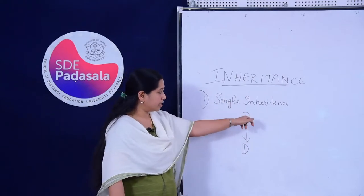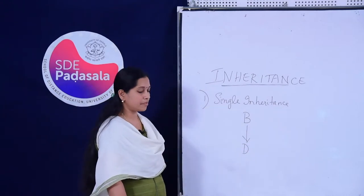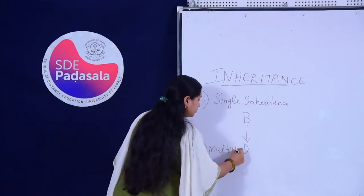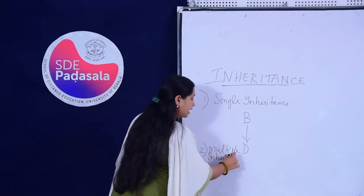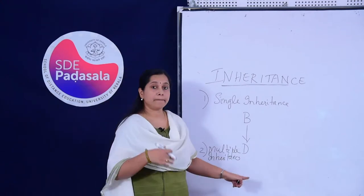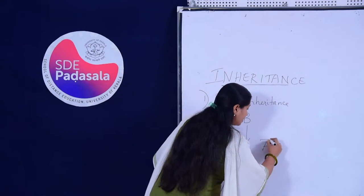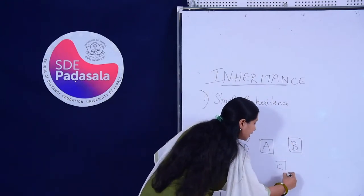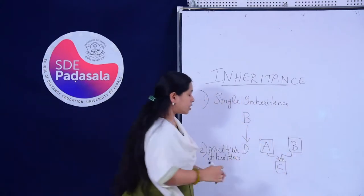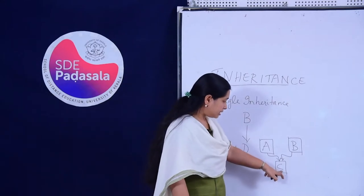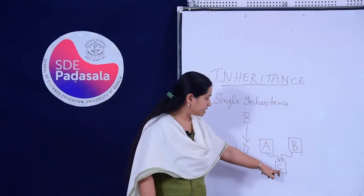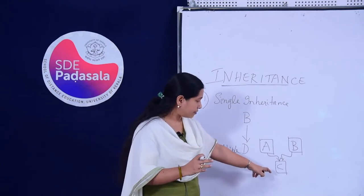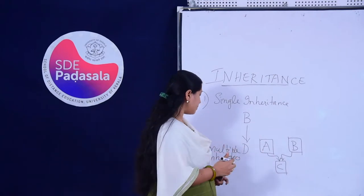As the name suggests, in single inheritance there will be only a single base class B and a single derived class D. If you have a single base class and a single derived class, that is single inheritance. As in the previous example, the base class was Student and the derived class was Engineering — that was an example of single inheritance. The second type is multiple inheritance. In multiple inheritance, you have multiple base classes — more than one base class — and a single child class. Going back to the real-life example, this particular boy inherited qualities not only from the father but also from the mother. So there is a child or derived class inheriting characteristics from more than one base class.